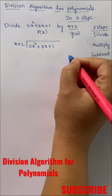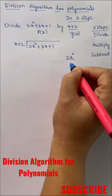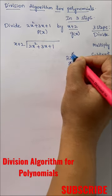The first step is divide. So we will divide first term of p(x) with first term of g(x). You will get 2x.